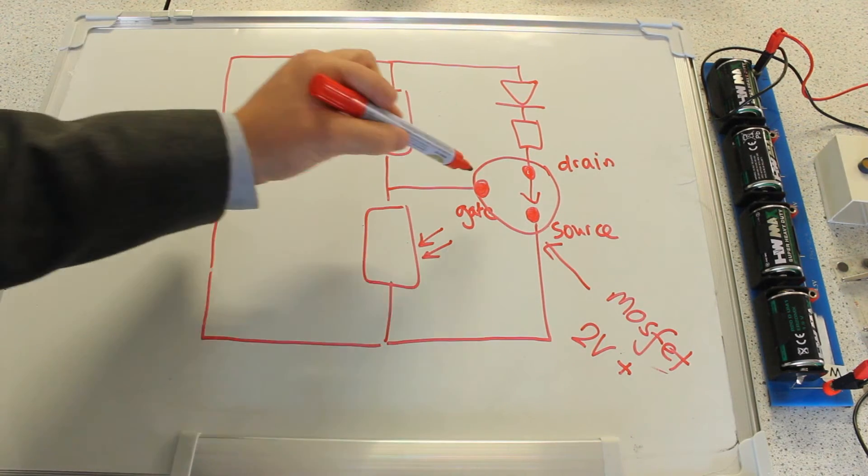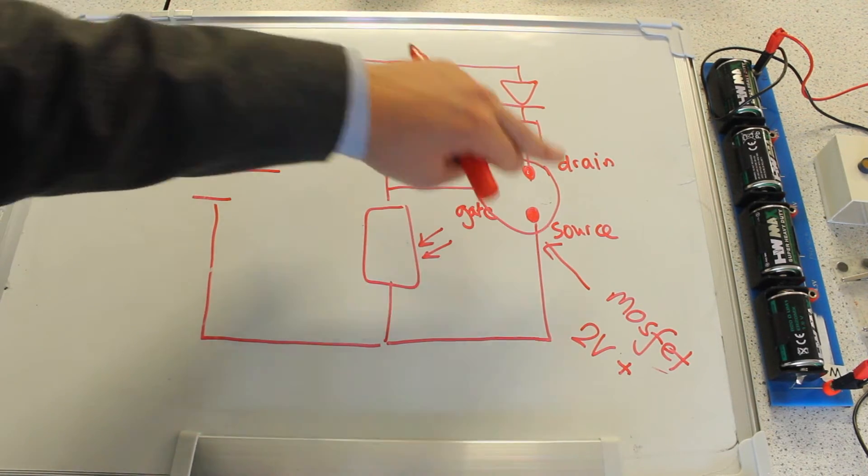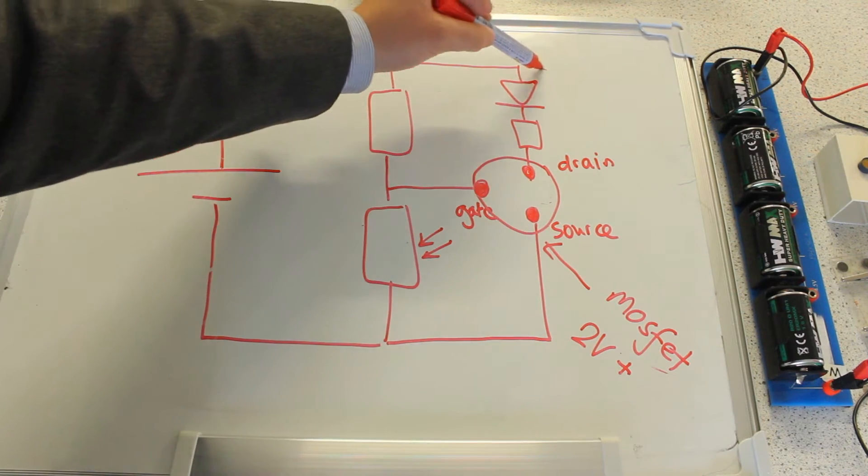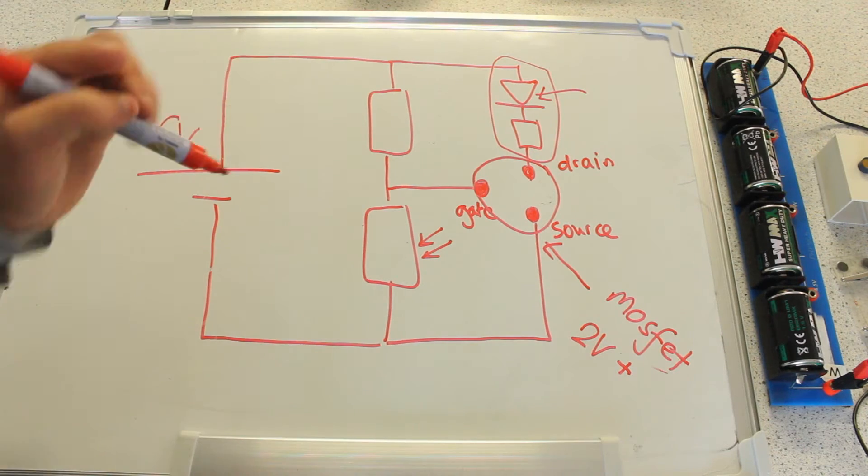If the potential difference between these two points is less than two volts, then no current is allowed to flow between the drain and the source. And if no current is allowed to flow between here, no current can flow through here and the LED won't emit any light.